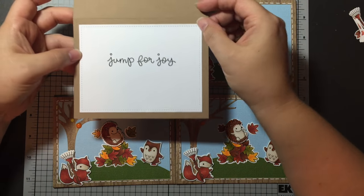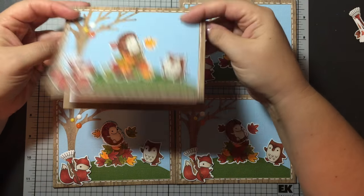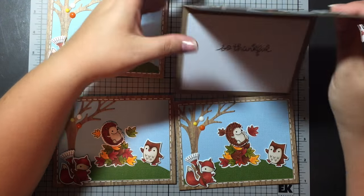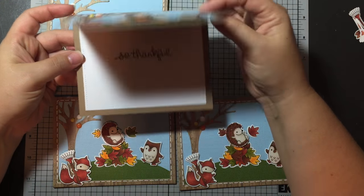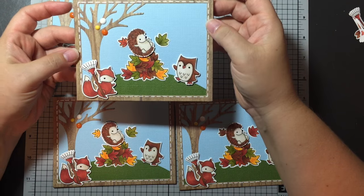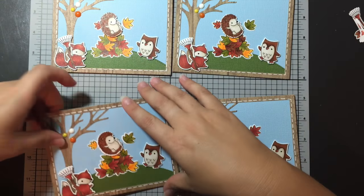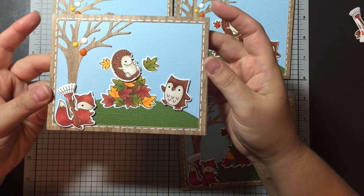And then on the inside I just have a stitched rectangle with the sentiment jump for joy or the other one is so thankful. And that's from the same stamp set. So super cute, they're all the same but just have their own little quirks to them.